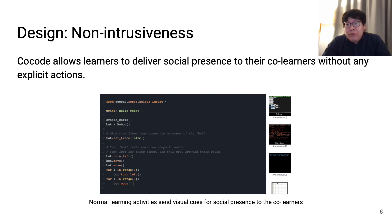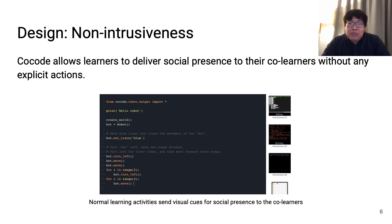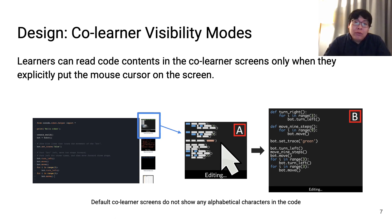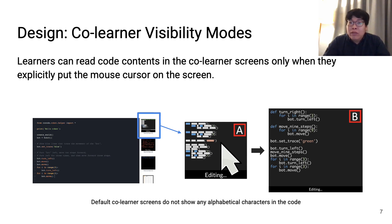CoreCode has a few design elements that help provide social presence, and the first one is non-intrusiveness. CoreCode allows learners to deliver social presence to their co-learners without any explicit actions — their normal learning activities send visual cues for social presence. Also, co-learner screens do not show the actual code contents of other learners in the default mode. Learners can read code contents on the co-learner screens only when they explicitly place their mouse cursor on the co-learner screen.